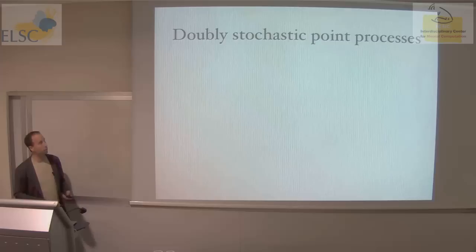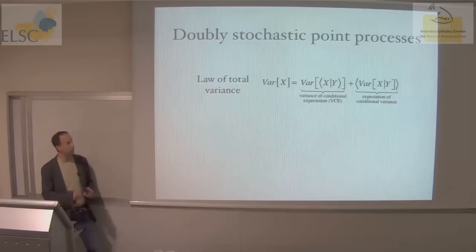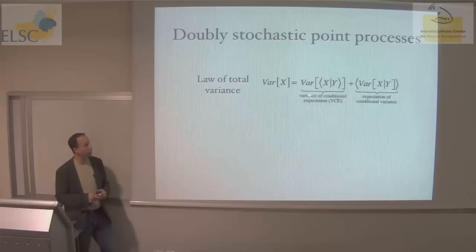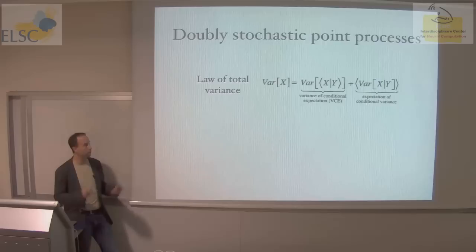When you observe a random variable that is dependent on some other hidden variable — in this case we're observing x and it's dependent on y — if we measure the total variance of x, we can divide it into two components. One is the variance of the conditional expectation: the variance of the expectation of x if only we knew y. The other is the expectation of the conditional variance. You actually do something like this every day in least squares regression: one term is the variance of the residuals, and the other is the variance of the expectations from the regression.